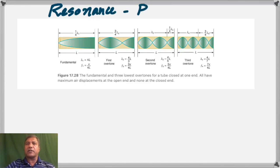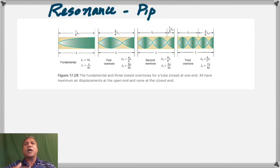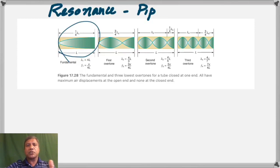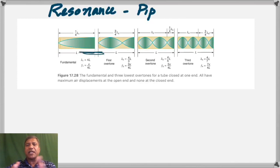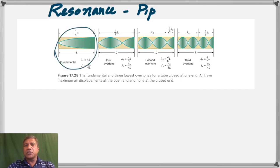The last topic is resonance in air columns with a closed pipe, where one end is closed and the other end is open. We can set up sound waves in it to produce resonance — for certain lengths, you get maximum sound. In the first diagram, there is a node at the closed end and an antinode at the open end. A node is where there is no vibration because the air particles can't move since the end is closed, while the antinode is where there is maximum vibration since the air molecules are free to vibrate.